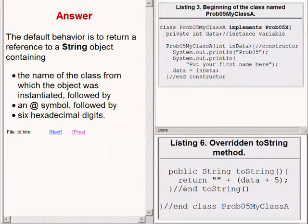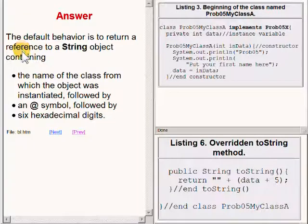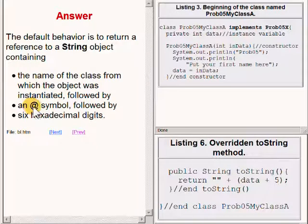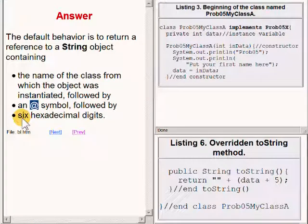The default behavior of the toString method is to return a reference to a string object that contains the name of the class from which the object was instantiated, followed by an at symbol, followed by six hexadecimal digits.